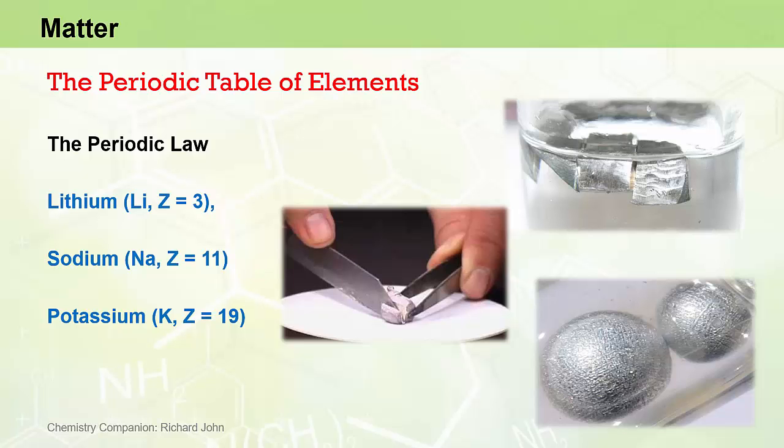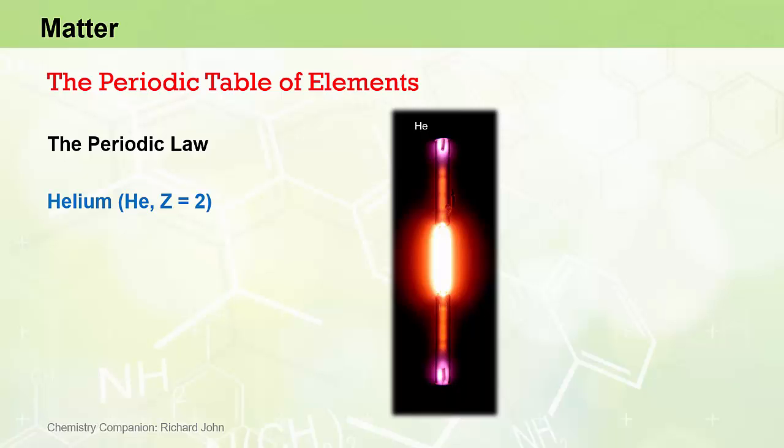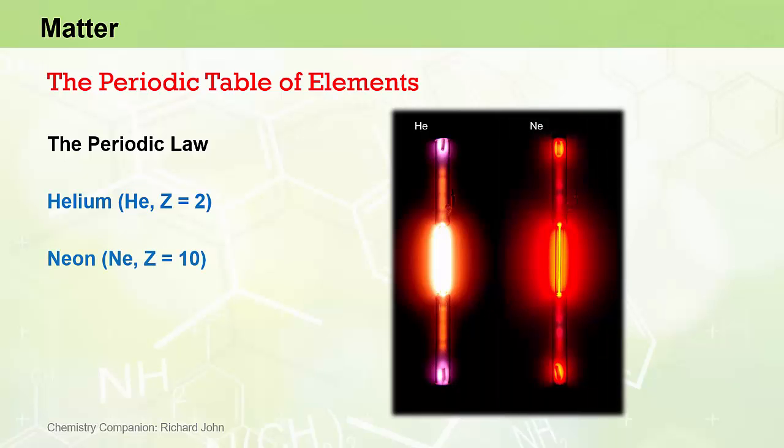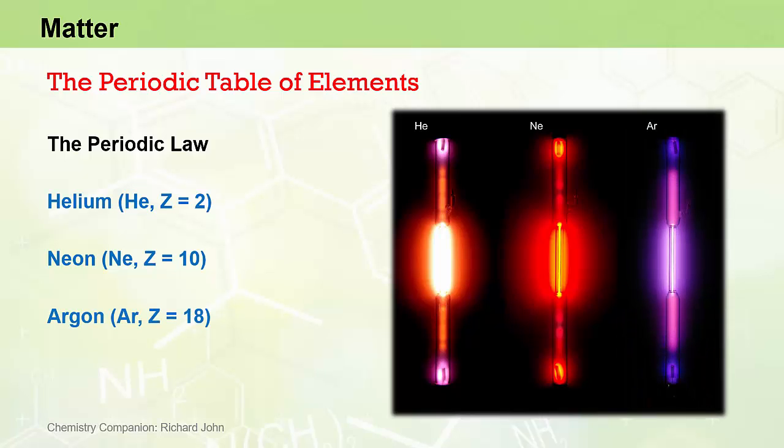It was further noted that the elements immediately preceding each of these elements in terms of atomic number, helium, atomic number 2, neon, atomic number 10, and argon, atomic number 18, were all inert, non-reactive gases that tended not to form chemical compounds.